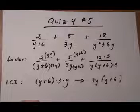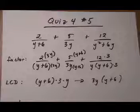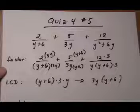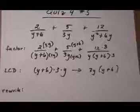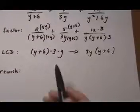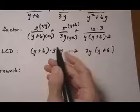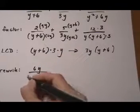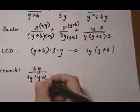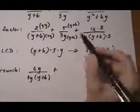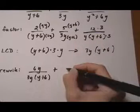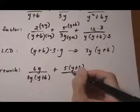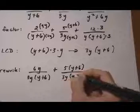So let's finish the rewrite. On the first fraction, we have the numerator 6y, because it's 2 times 3y, over the common denominator of 3y, y plus 6, plus. Second fraction, we have 5 times y plus 6, over common denominator 3y, y plus 6.